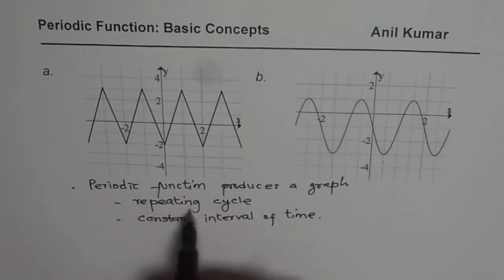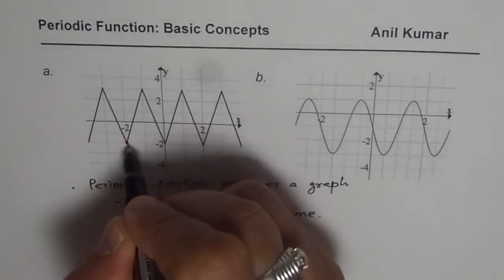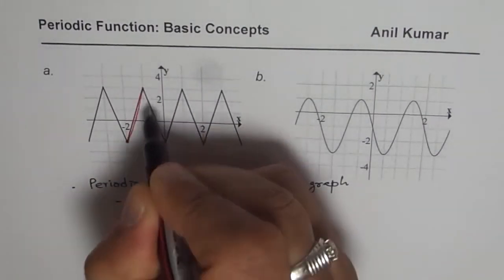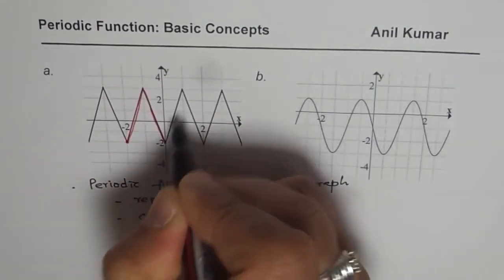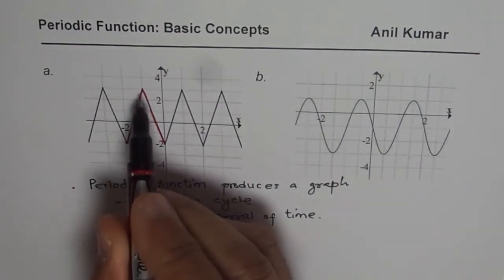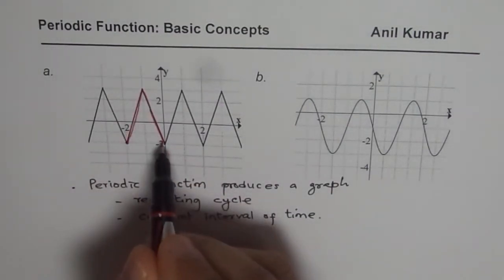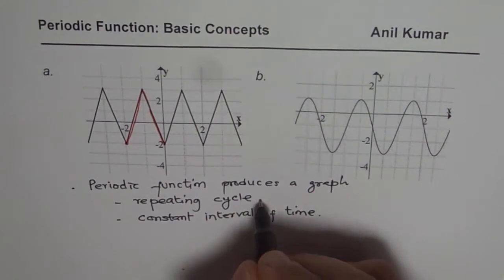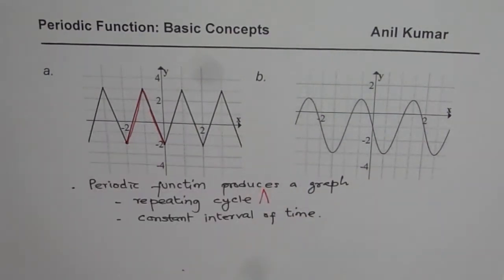First one is a repeating cycle. So let us look into this particular function. We could see that we have a cycle which starts from here, goes up to this point, comes back, and then it repeats. So the one which I have highlighted in red is one cycle. So this is one cycle for the first wave.